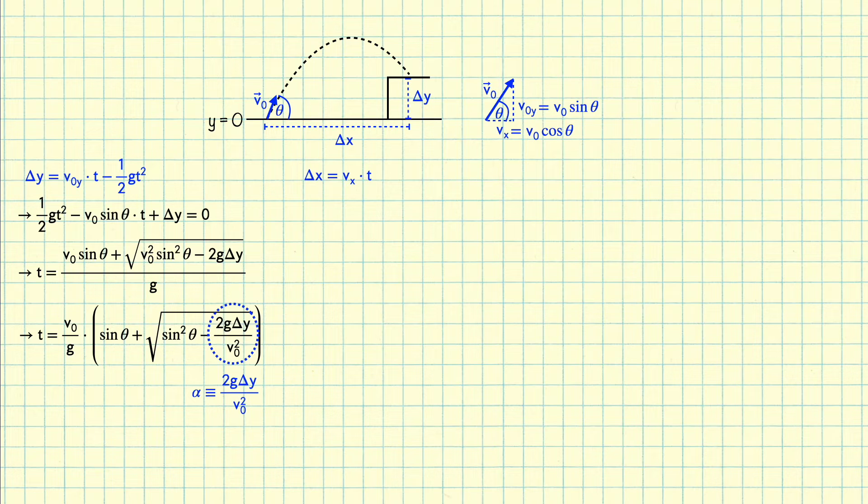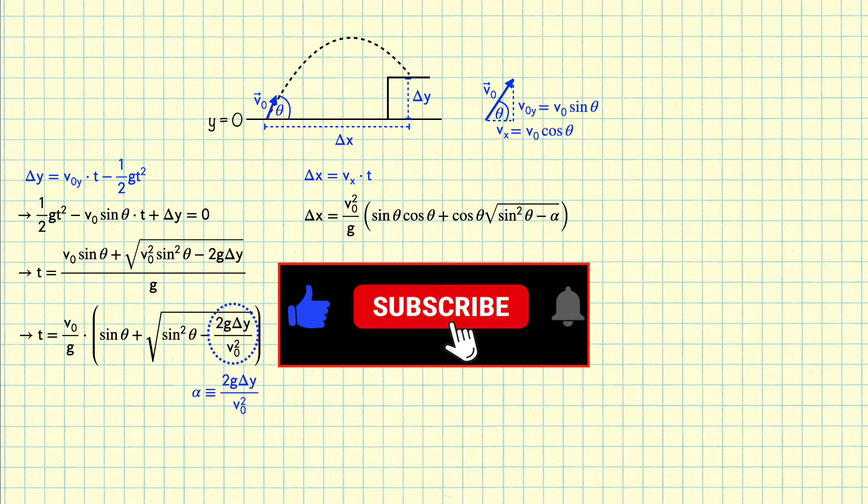Now that we know the time in which the ball was caught, we can plug that into our expression for delta x, and notice here that I've also substituted in vx equals v0 cosine theta. If you're enjoying this video so far, please help out the channel by liking and subscribing, and maybe share it with a few friends.